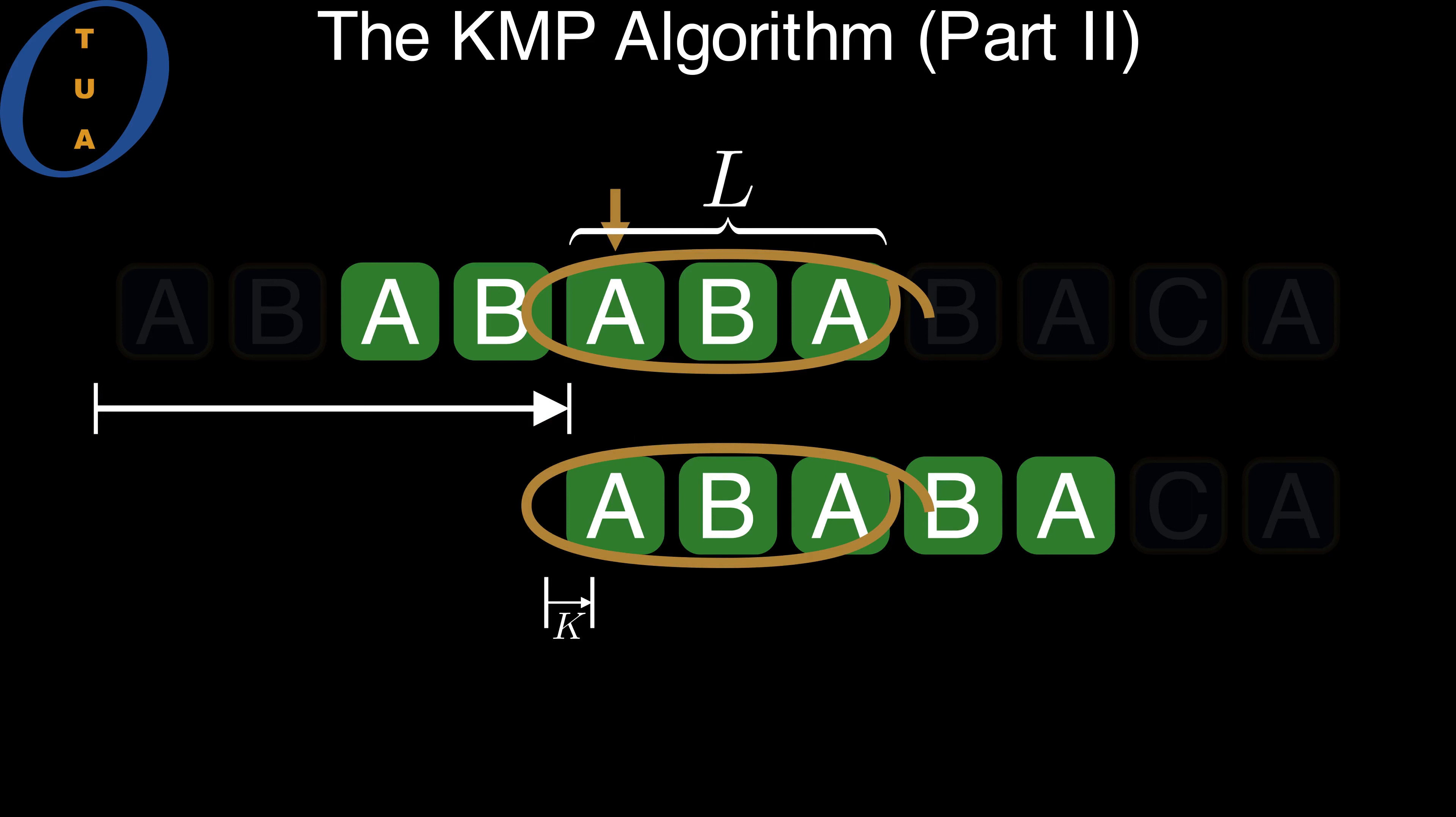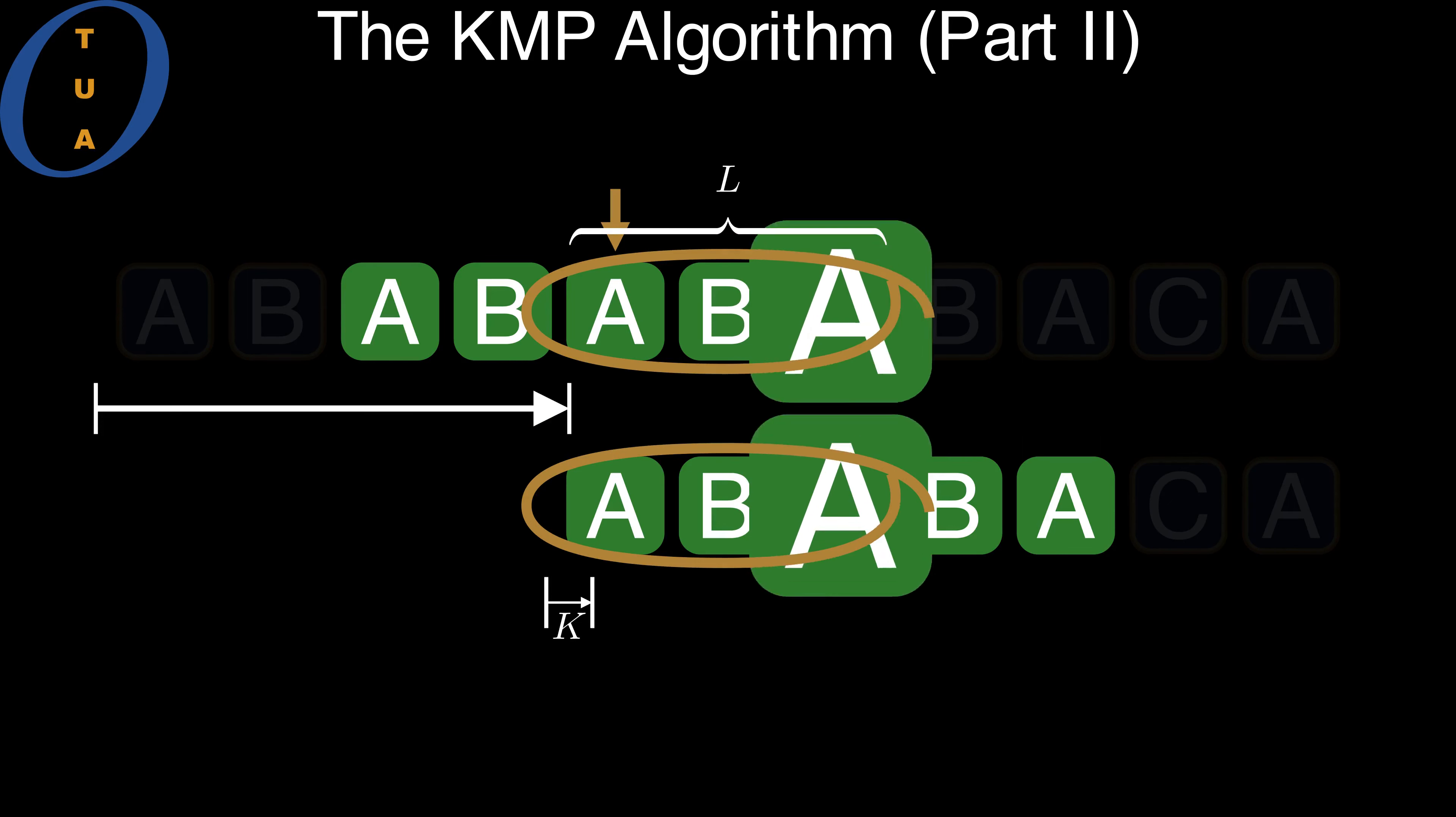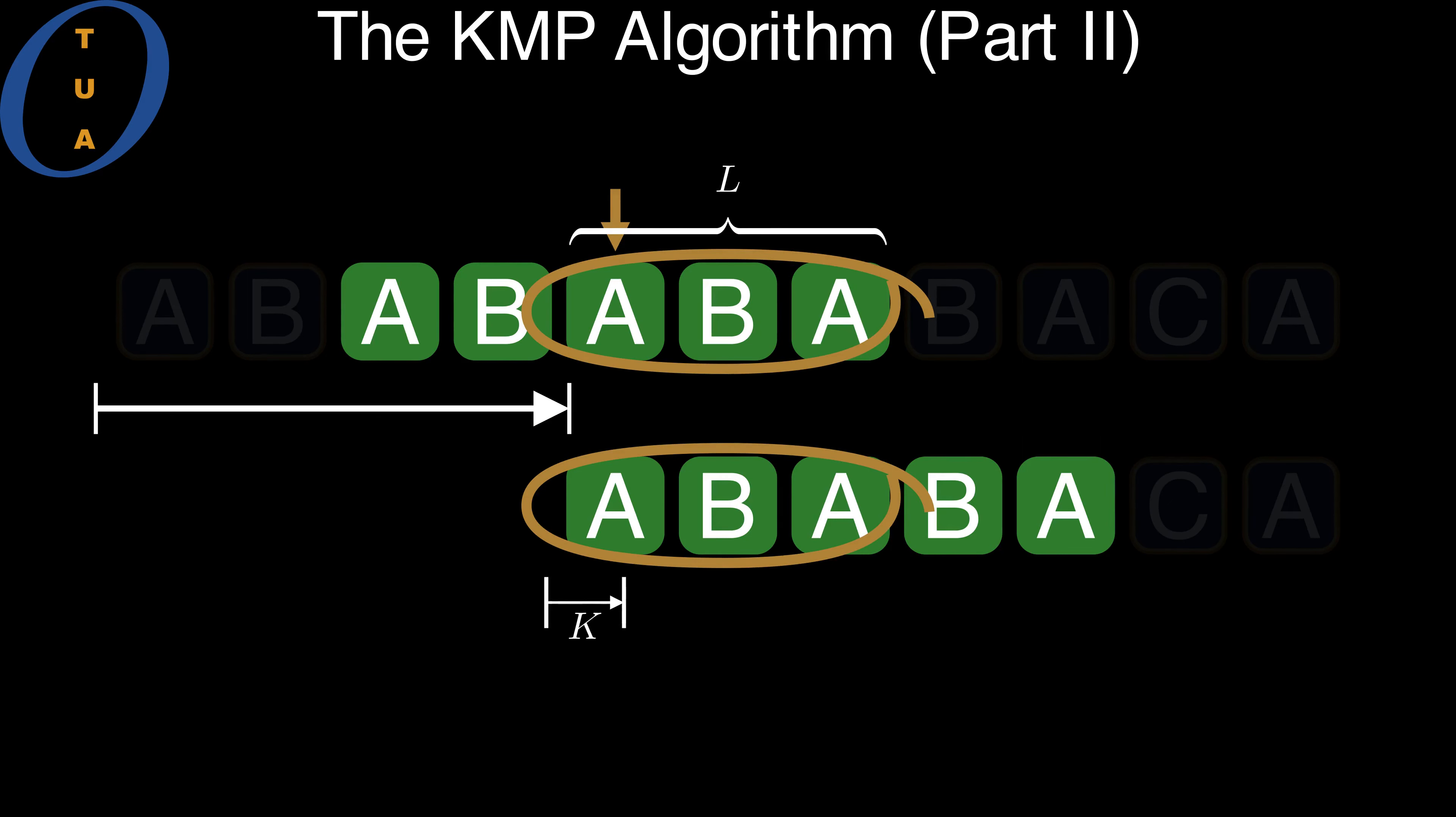For these L pairs of symbols, there is absolutely no need to check their equality again. Therefore, we can simply update K to the value L.